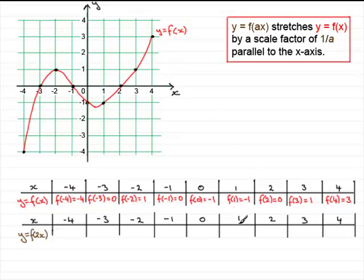If x was 1, then I'd be looking at 2 times 1, which is 2, f of 2. So we've got the value of f of 2 when x is 1. And what was f of 2? It was this point here, 0.